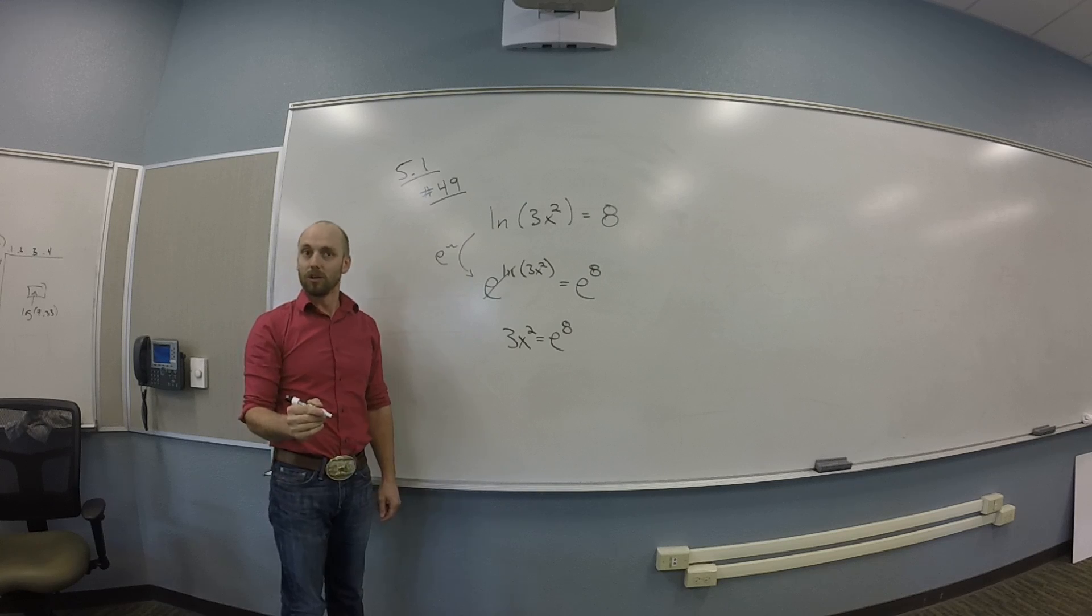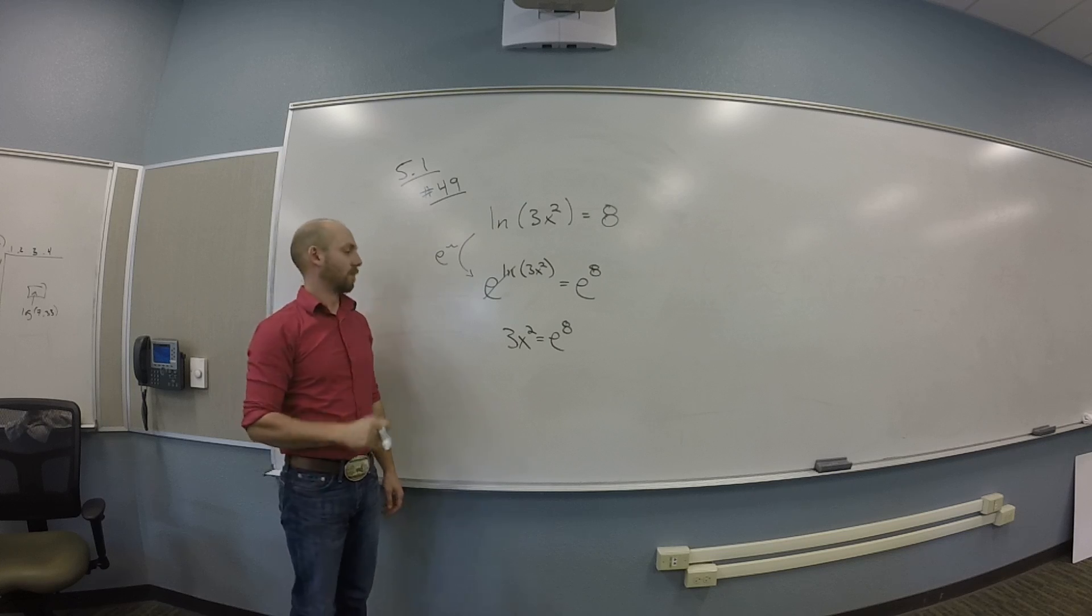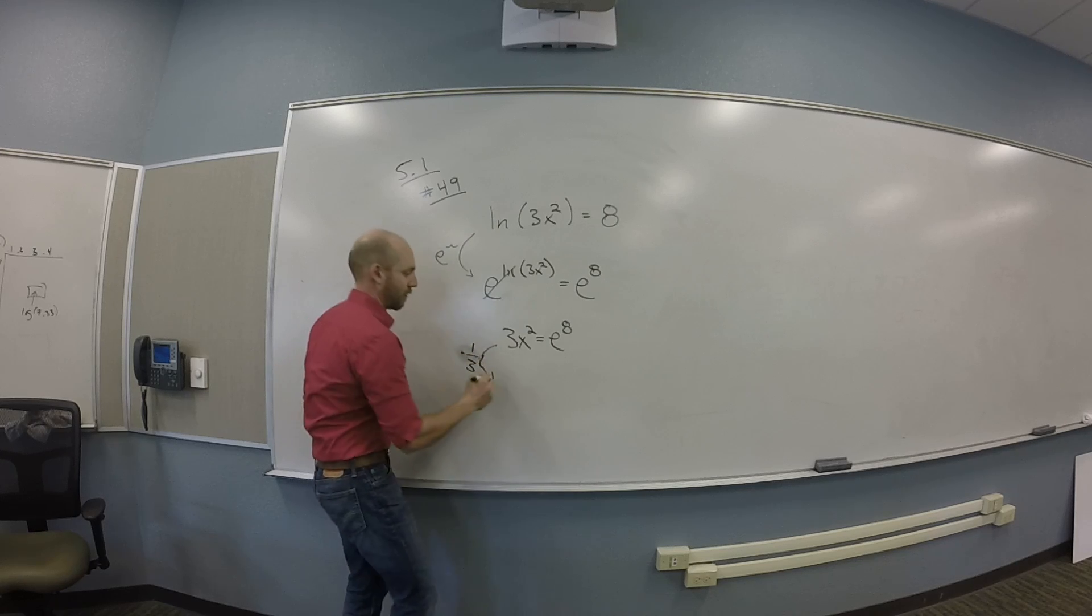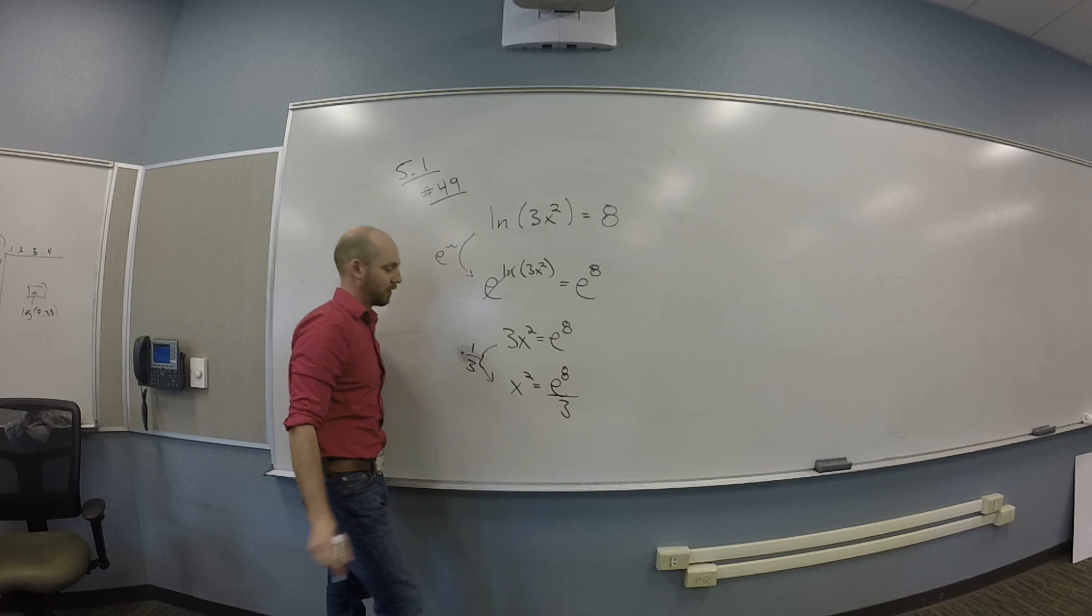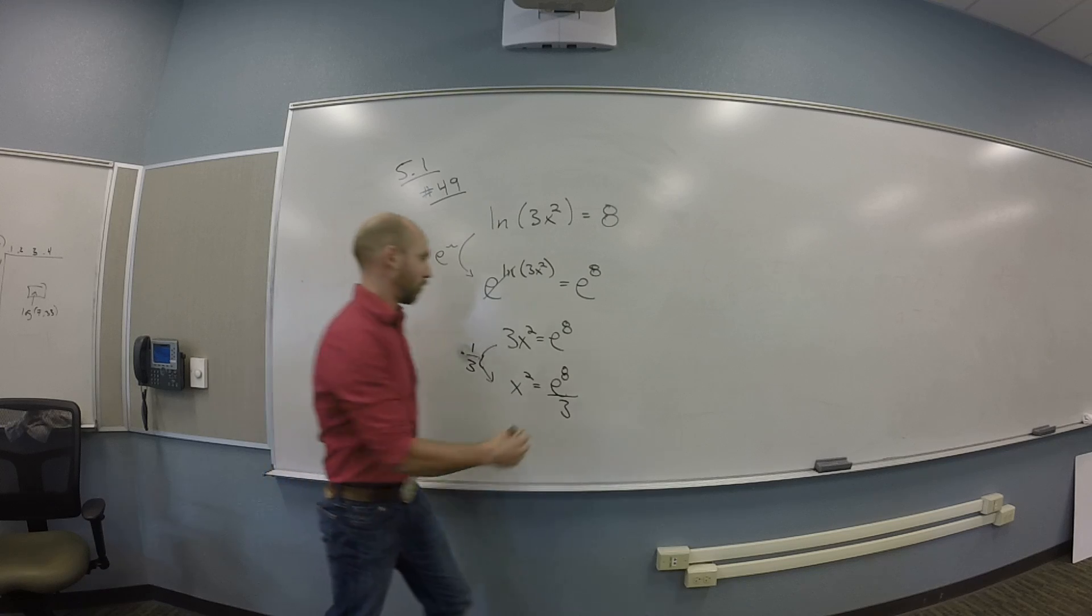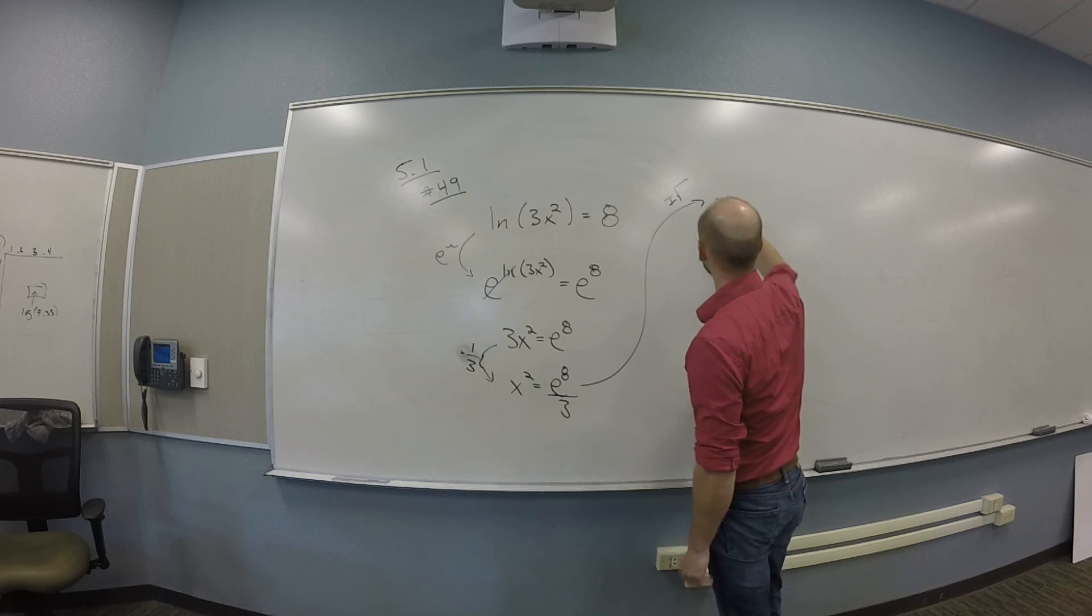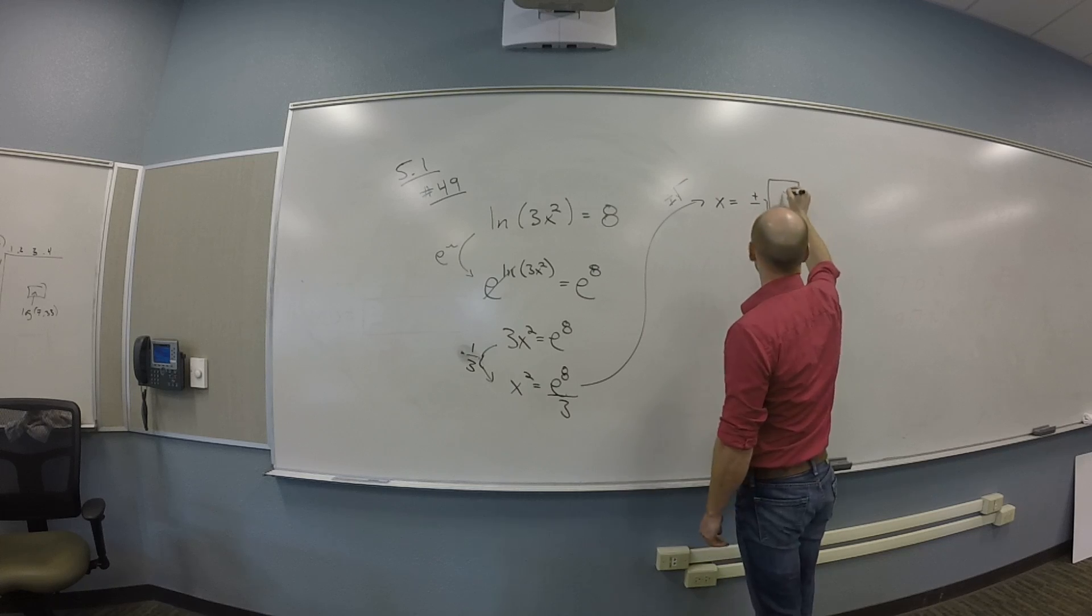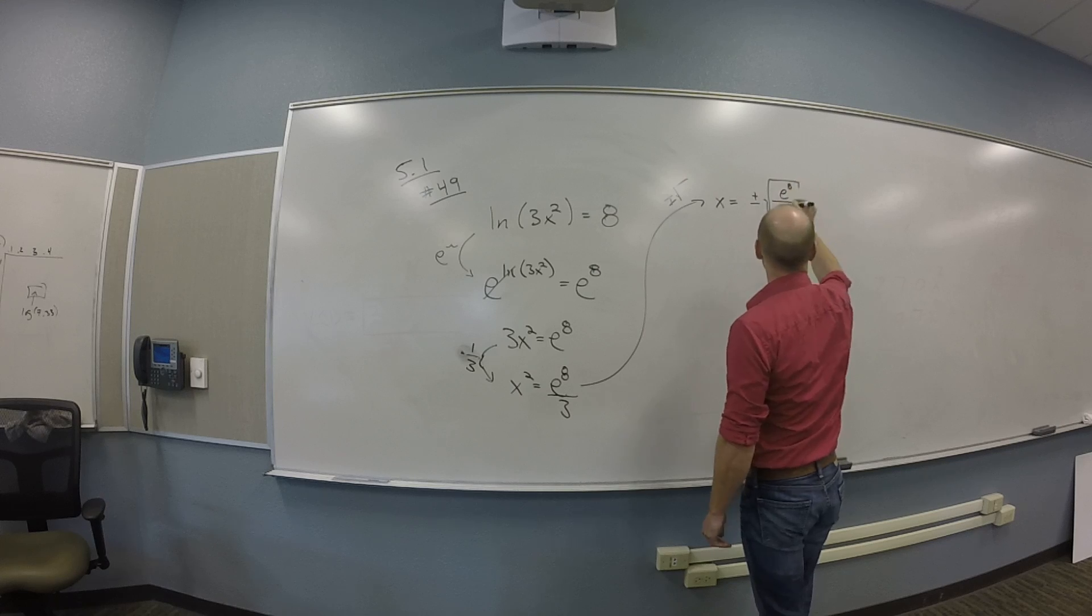You guys see that? There's other ways, lots of which are right. And I would advise on this one divide by 3, multiply by a third, get x squared is e to the 8th over 3. And then what? Square root. Square root of both sides. Hit both sides with a plus or minus square root. Yep. So you'll get x is plus or minus the square root of e to the 8th all over 3.